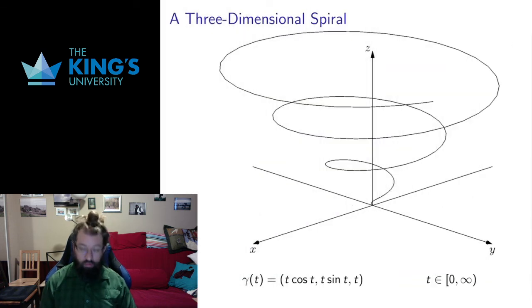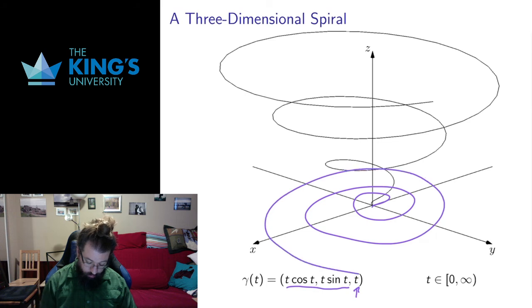And I can do this actually in three dimensions as well. So this is exactly the same as what we just had, the Archimedean spiral. But then I add a Z coordinate. A parametric curve can output in as many dimensions as we want. So here I have the Archimedean spiral and the Z coordinate is increasing.